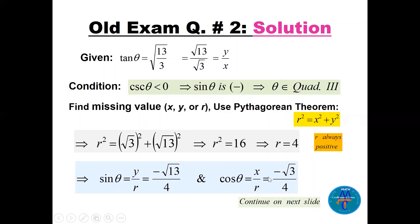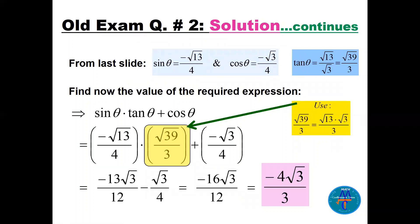And cos(θ) = -√3/4. Remember both sine and cosine are negative in Quadrant 3. Tan(θ) = √13/√3, which can be rationalized to √39/3. Now we calculate sin(θ)·tan(θ) + cos(θ).